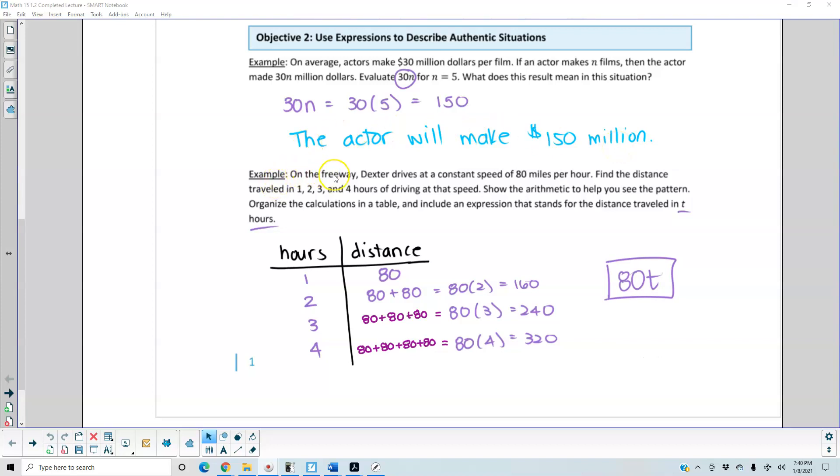Next example. On the freeway, Dexter drives at a constant speed of 80 miles per hour. Find the distance traveled in 1, 2, 3, and 4 hours of driving at that speed. Show the arithmetic to help you see the pattern. Organize the calculations in a table and include an expression that stands for the distance traveled in t hours. So we're making this table.